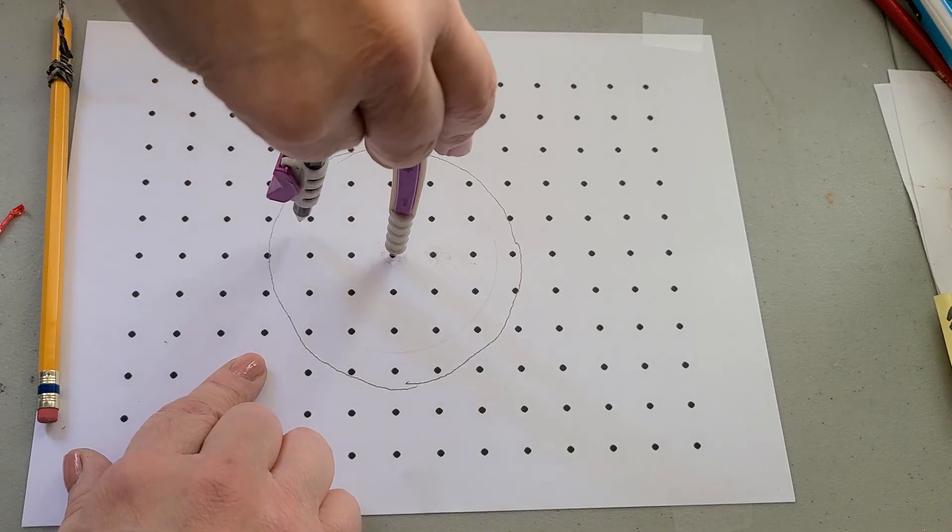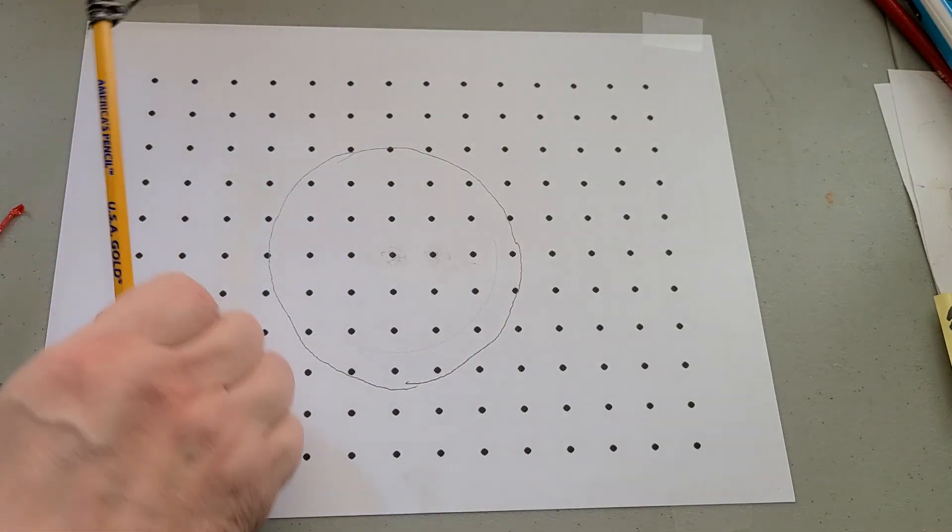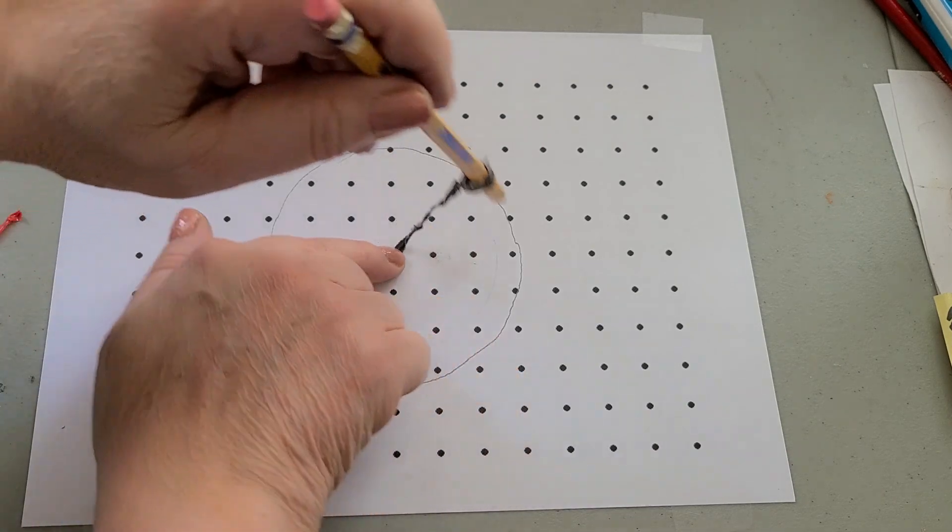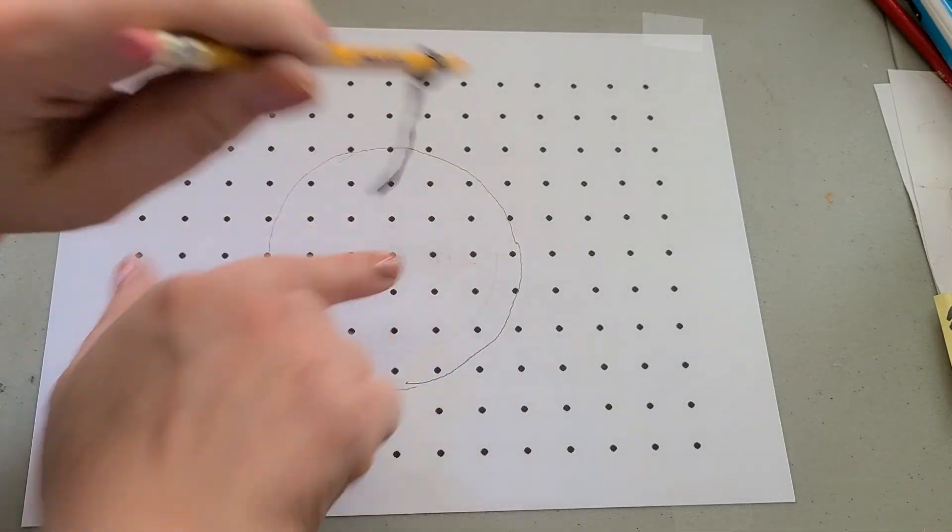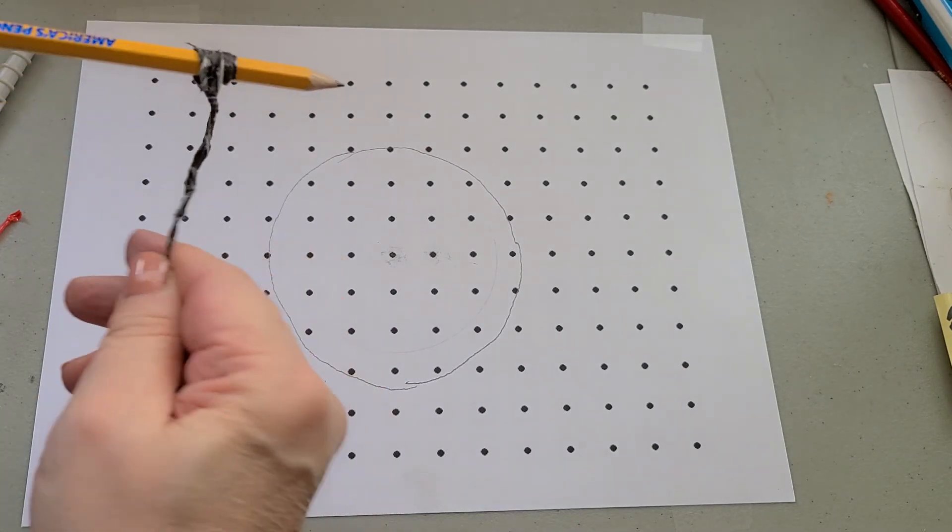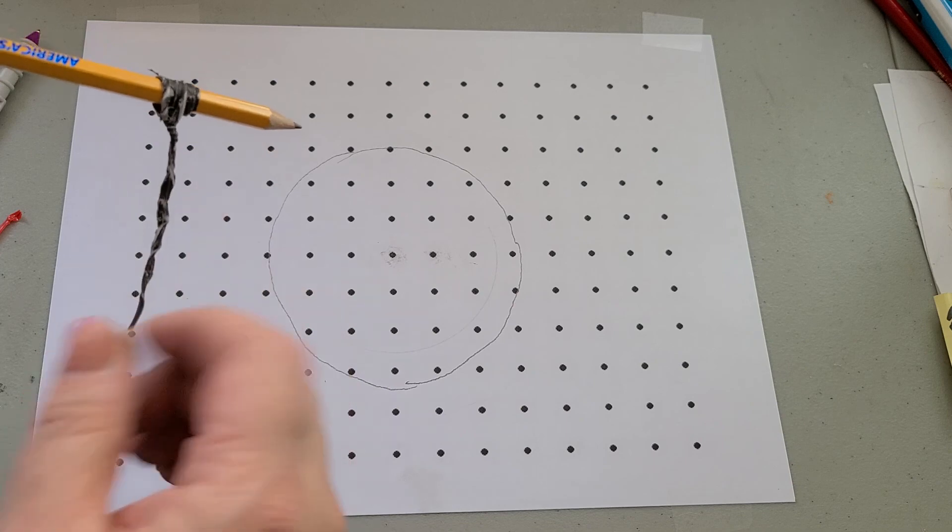It's the same idea. We have a pencil and we're going around a point. We can also do it with two pencils with a paper clip between them to hold it stiff.